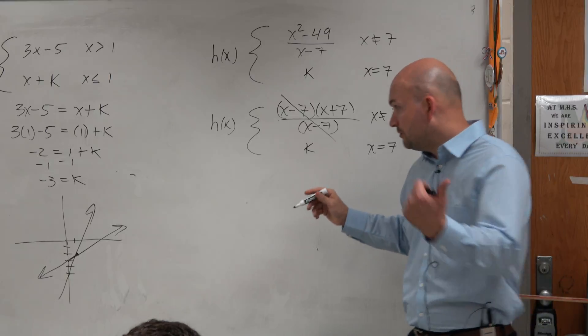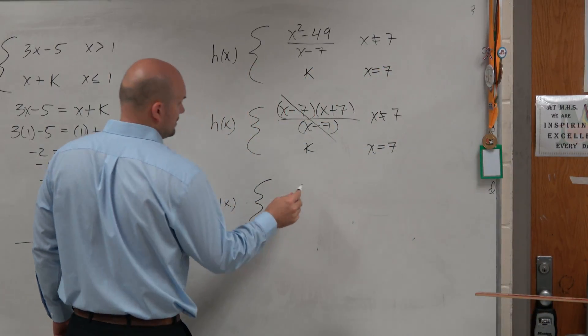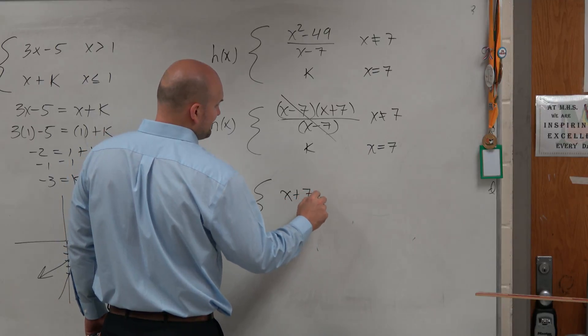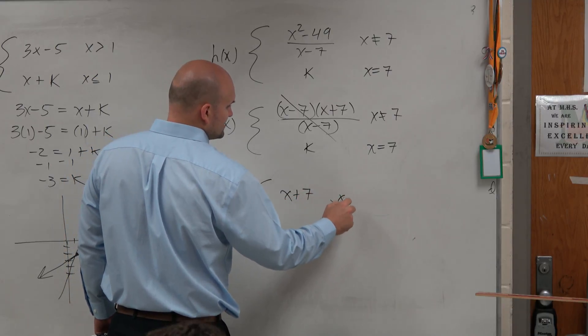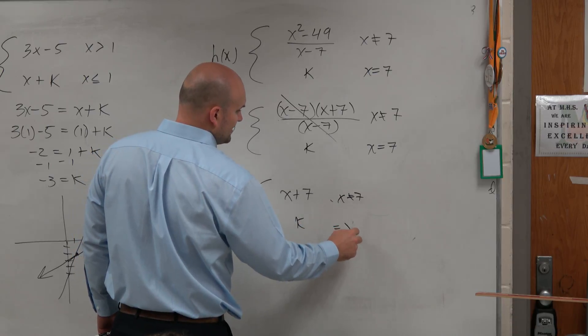That divides to 1, which leaves you with x plus 7, where x cannot equal 7. But then k is equal to when x equals 7.